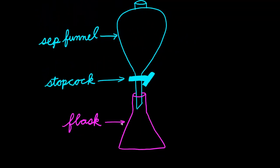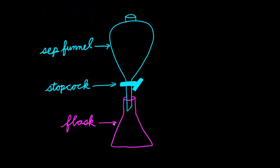So when we pour in our mixture, if the liquids in there have different densities, what you'll see is that they will separate out into different layers. And on the bottom, you'll have the liquid with a higher density, and on top, you'll have the liquid with a lower density.